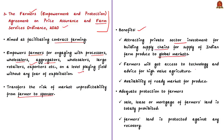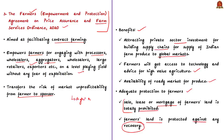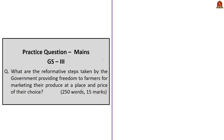This ordinance is considered to facilitate private sector investment for building supply chains for Indian farm produce in global markets. Farmers will get access to technology, advice for high value agriculture, and ready markets for their produce. Farmers will engage in direct marketing, eliminating intermediaries, enabling full price realization. The ordinance also provides protection: sale, lease, or mortgage of farmers' land is totally prohibited, and farmers' land is protected against any recoveries by private players.